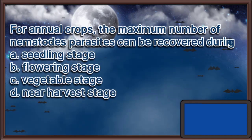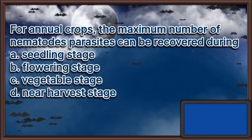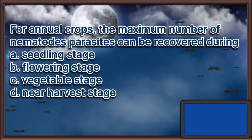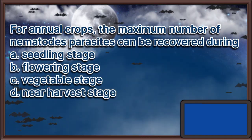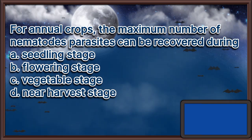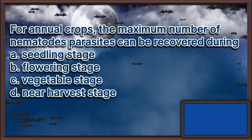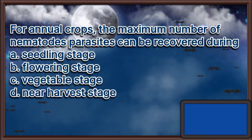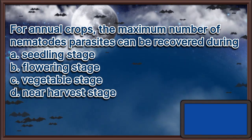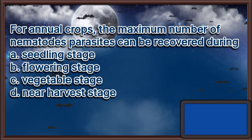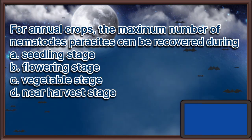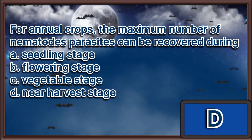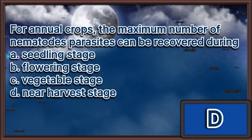For annual crops, the maximum number of nematode parasites can be recovered during: A. Seedling stage. B. Flowering stage. C. Vegetative stage. D. Near harvest stage. The answer is letter D.